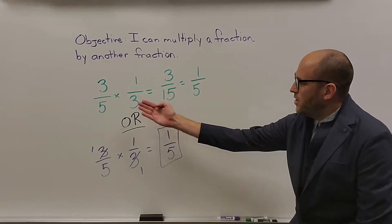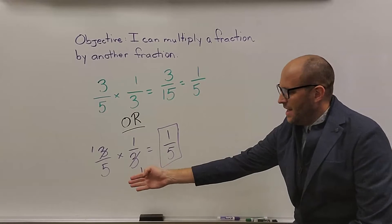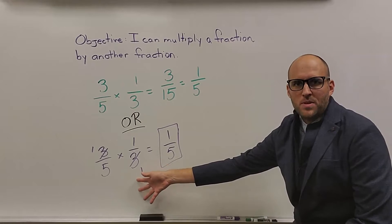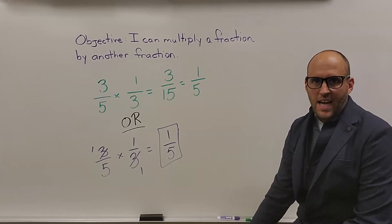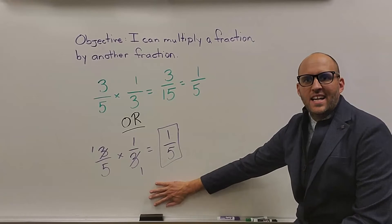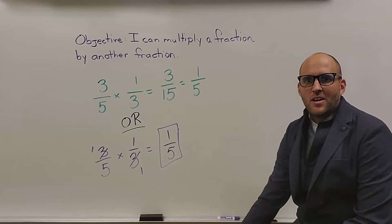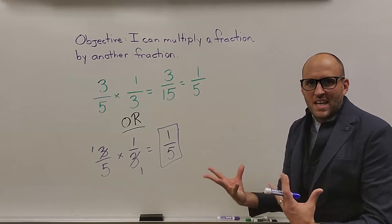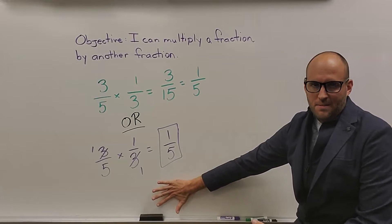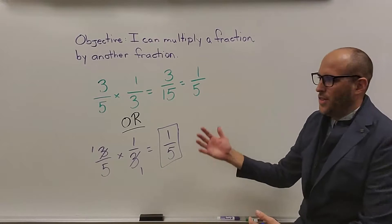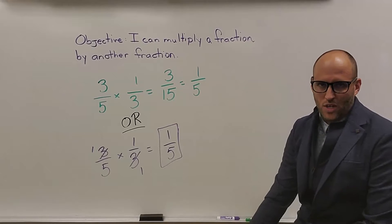One way is where you simplify at the end, and the other way, which is the way I hope you start doing, is when you simplify before you multiply. This second way is going to be a lot easier, especially when you start multiplying by mixed numbers and the numbers get a lot larger, rather than doing it at the end where you get those really big numbers.